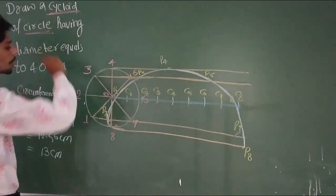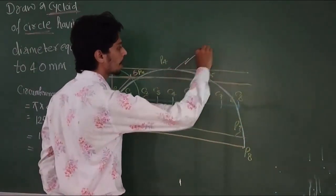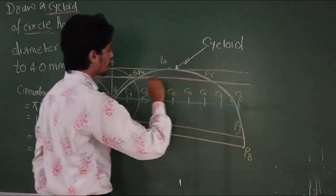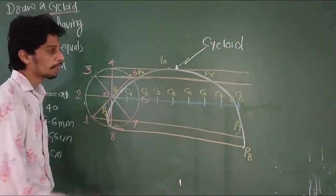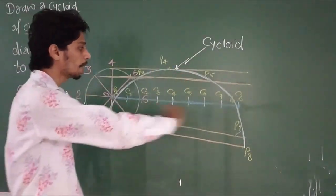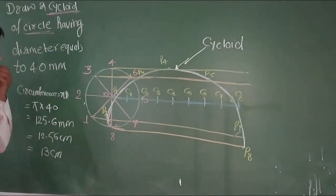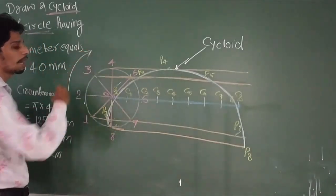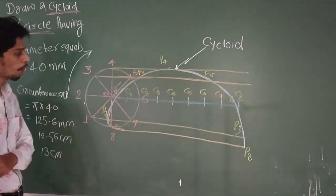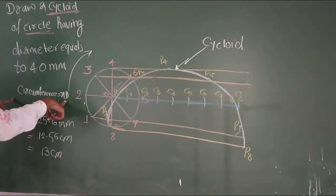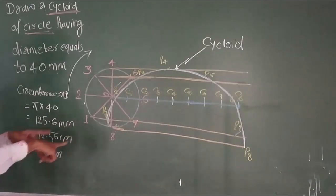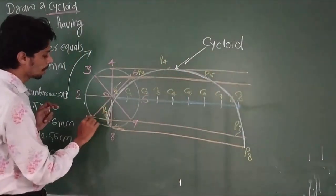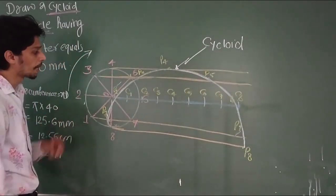P6, P7, and this is P8. So like this, you join all the points. This is the cycloid curve. This is a cycloid. Let's review: First, draw the circle. Divide it into 8 equal parts in clockwise direction: 1, 2, 3, 4, 5, 6, 7, 8.